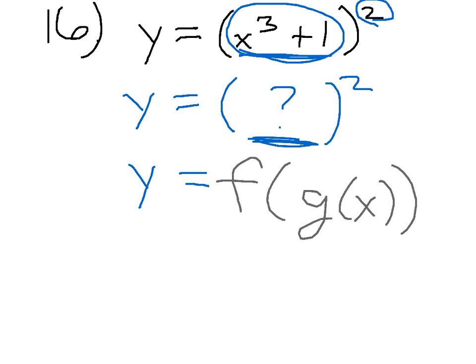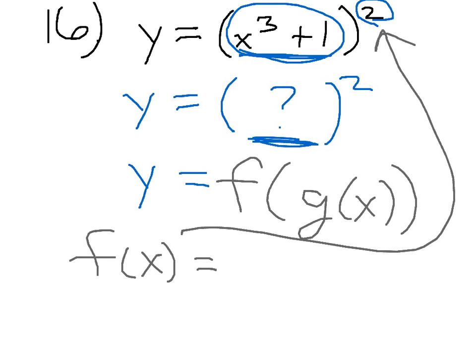Such that your outer layer, in this case, this is just the stuff being squared. Well, how do I say stuff being squared? I just say something squared. Well, let's use x. That's our input, our favorite input variable there.